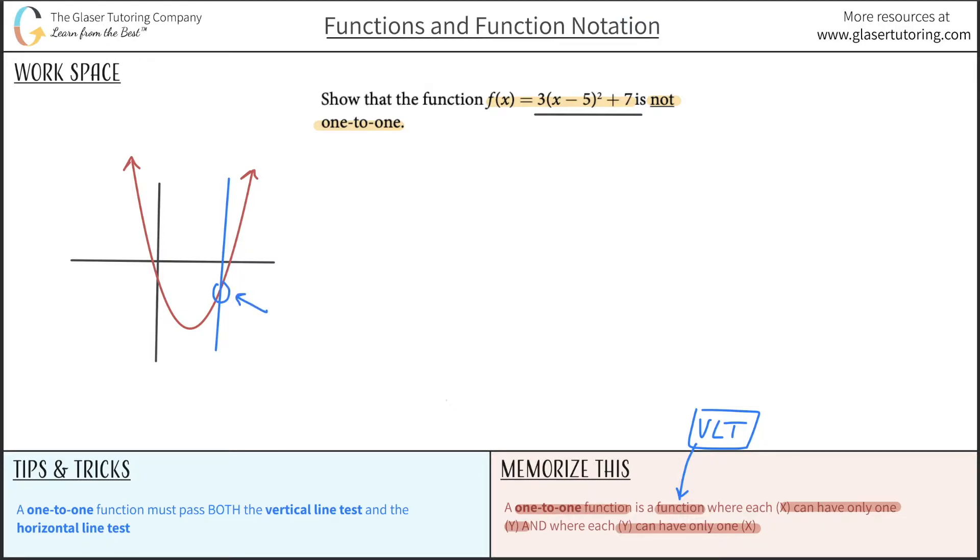So therefore, if it intersects at less than two times, one or less, it is a function. The graph is a function. So this is telling me we do have a function.